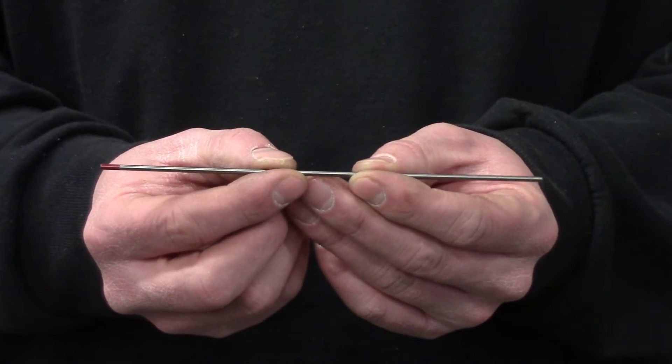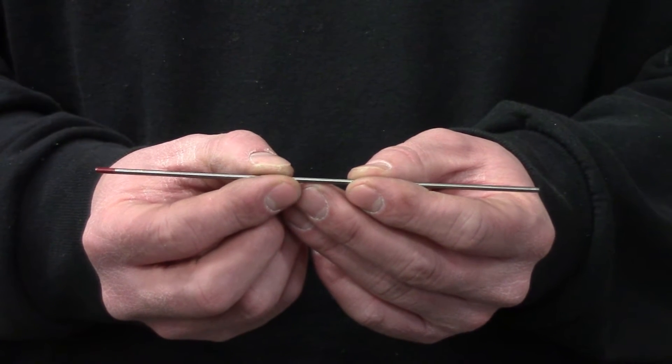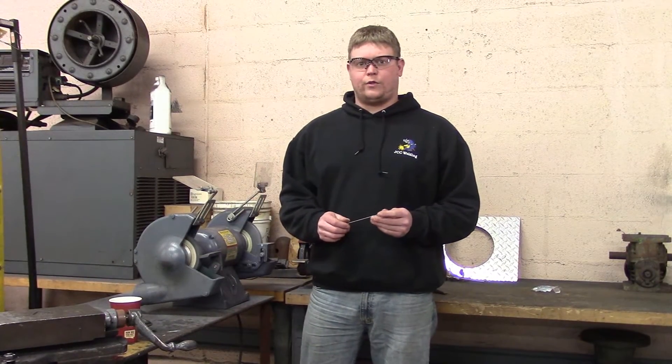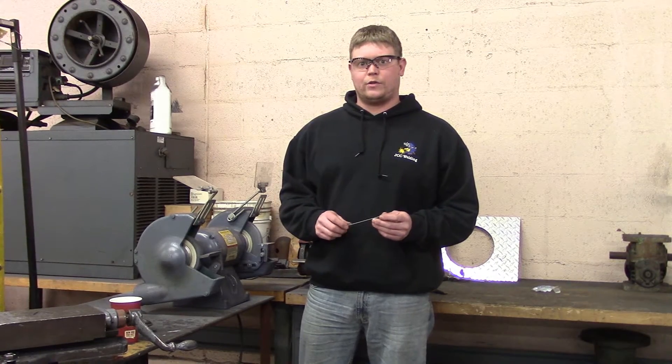So the first one we'll show you is with a hand. I'll just do it by hand and then a guy showed me a neat little trick and I'll show you that after the hand grind. All right, first we're going to show you the incorrect way to grind the tungsten here. So we'll zoom in on the grinding wheel while I do the incorrect way.